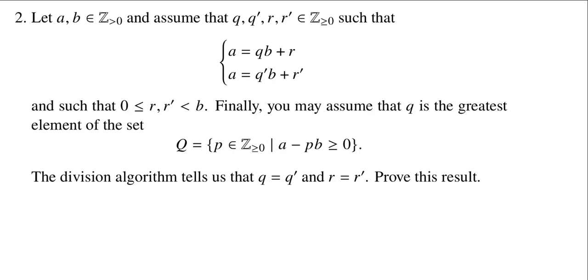And basically, Q, R and Q prime, R prime are going to form two what I called quotient remainder pairs, or QR pairs.